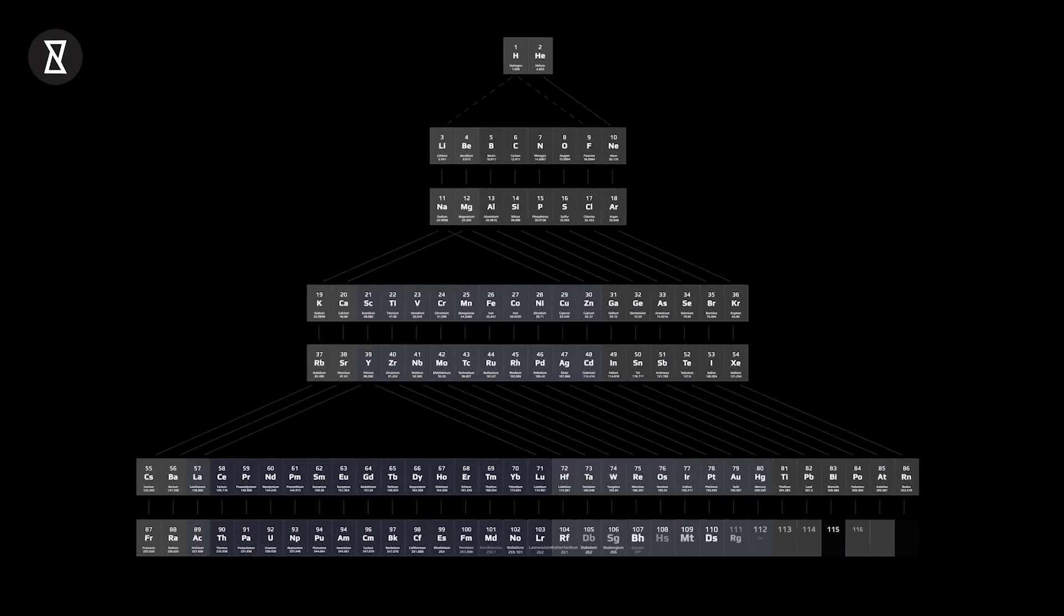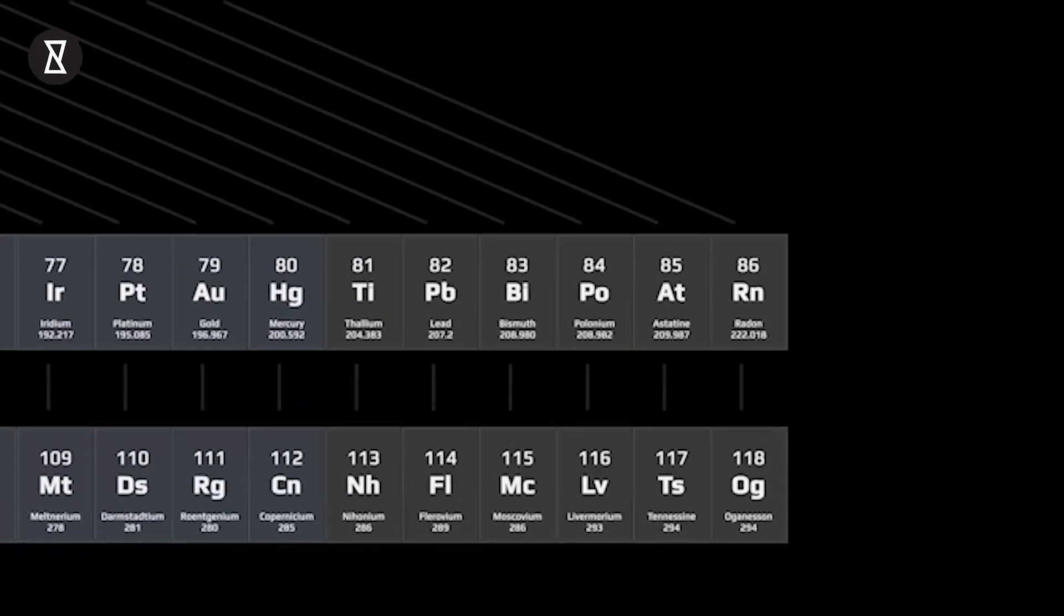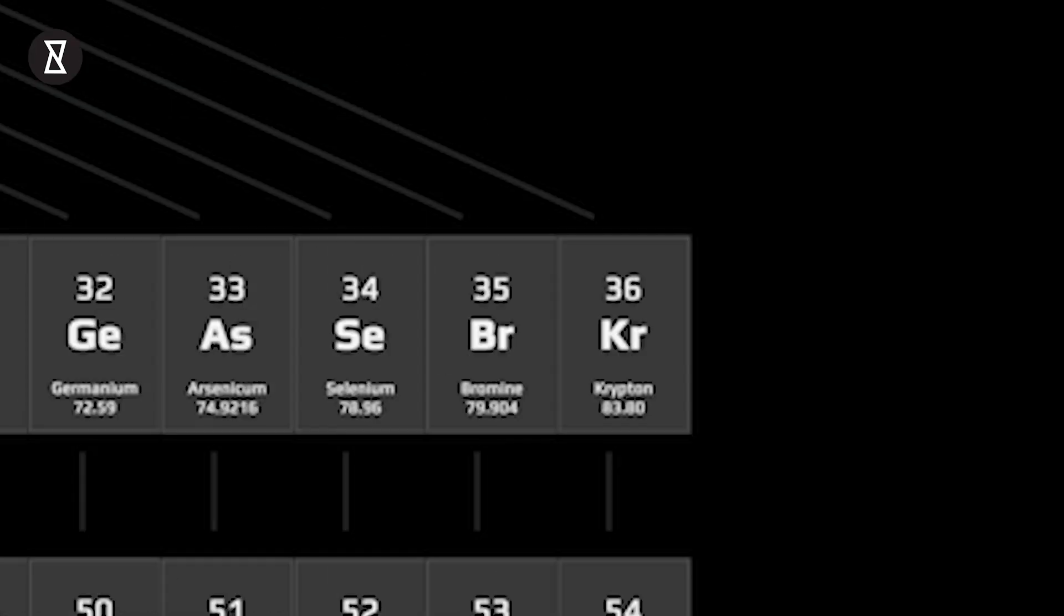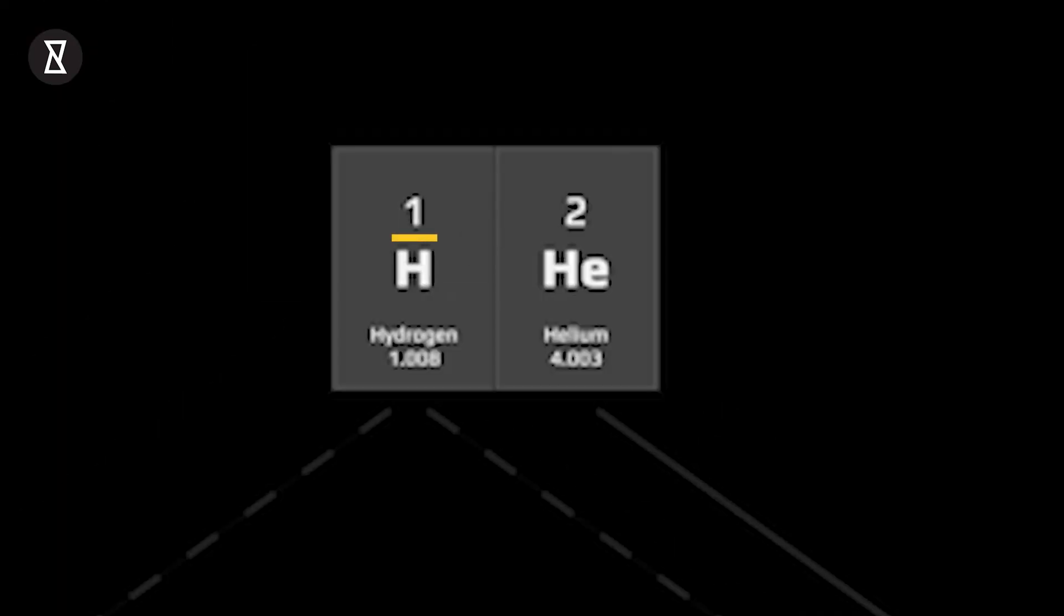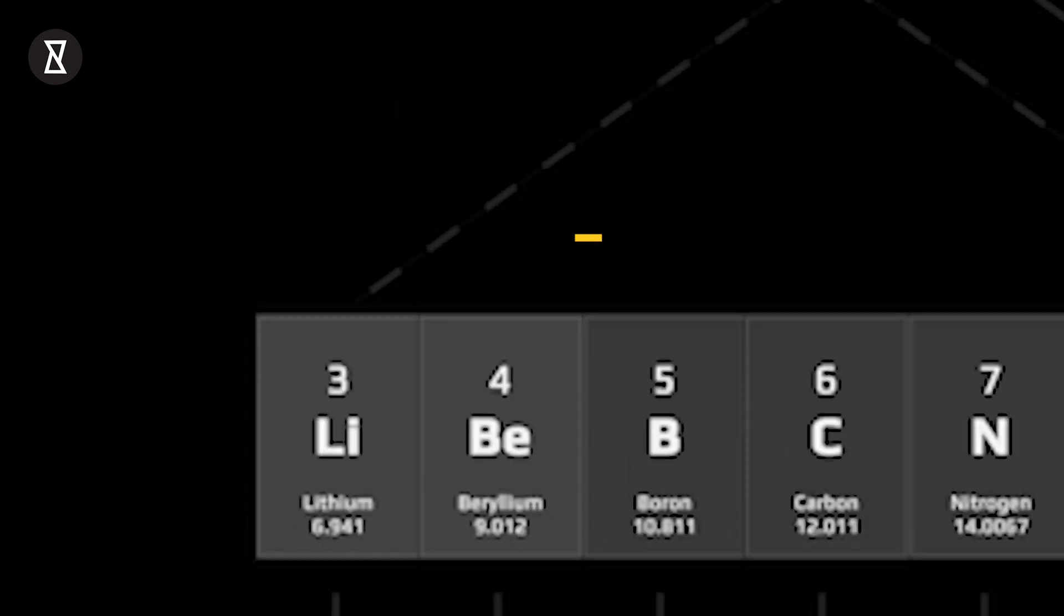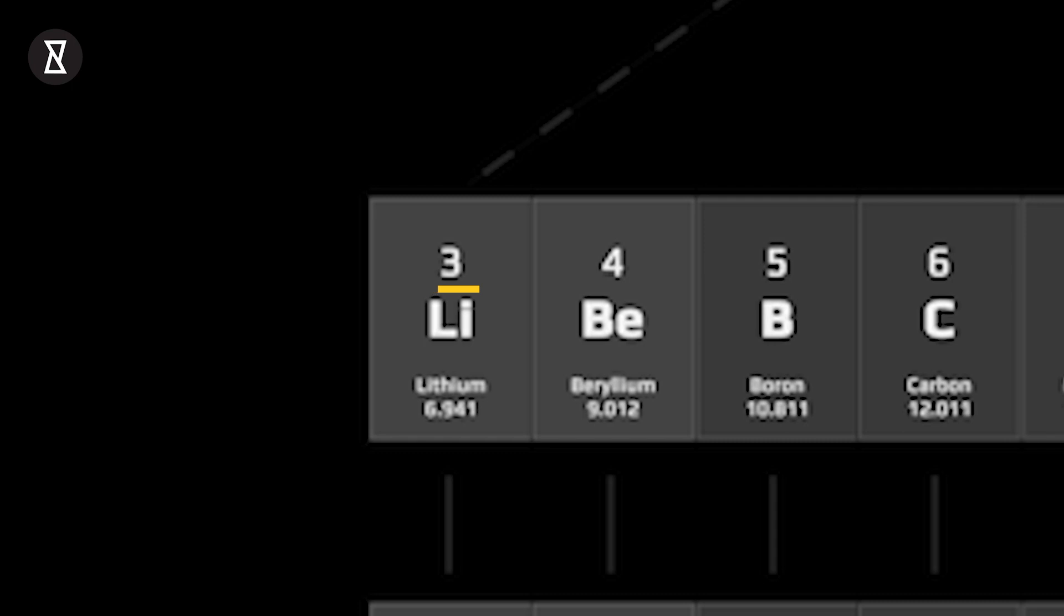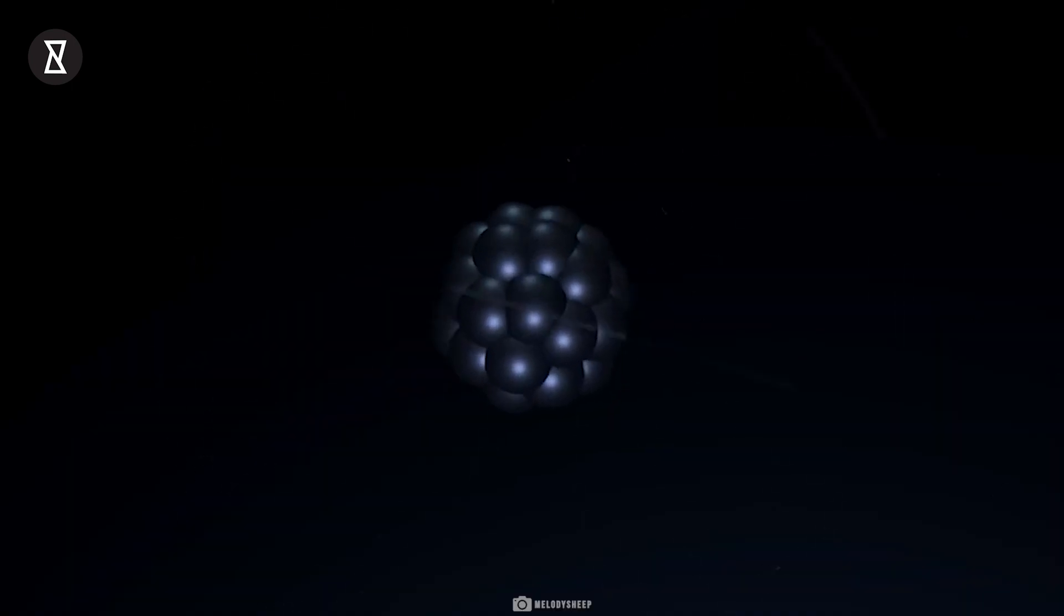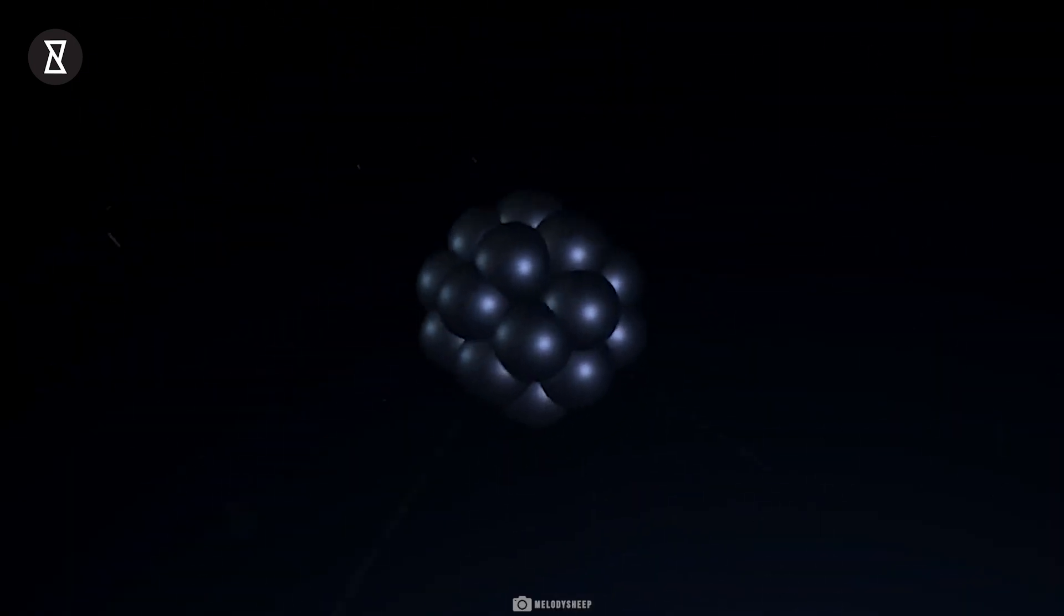The periodic table is a sequence of nuclear counts of protons. Hydrogen has one proton. Helium, two protons. Lithium, three protons. Each nuclei of an atom contains energy waiting to be released.